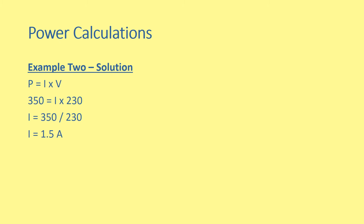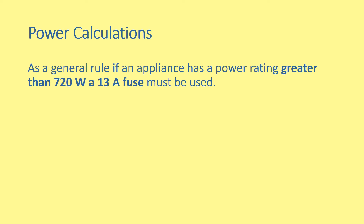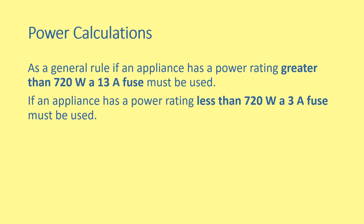For example two, we follow the exact same procedure. In this case, our current is equal to 1.5 amperes. As 1.5 amperes is less than 3 amperes, a 3 ampere fuse will be needed. As a general rule, if an appliance has a power rating greater than 720 watts, a 13 ampere fuse must be used. If an appliance has a power rating less than 720 watts, a 3 ampere fuse must be used.